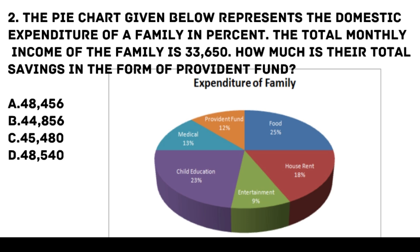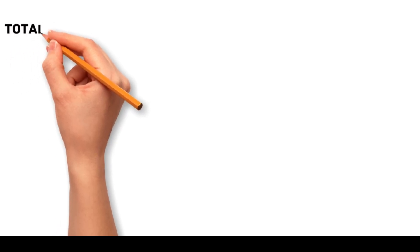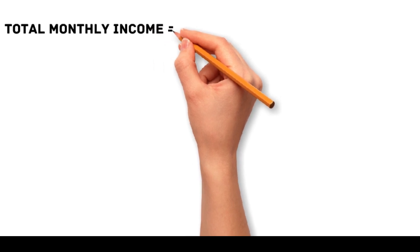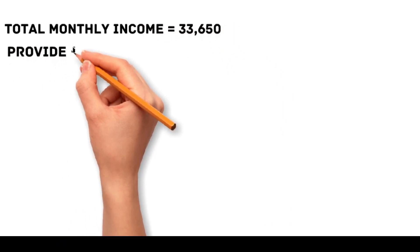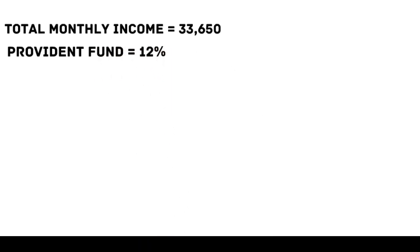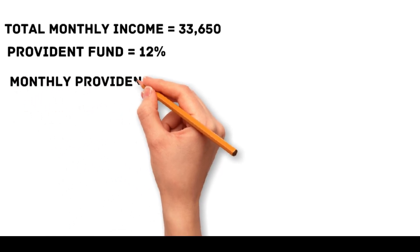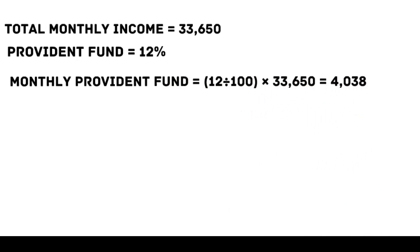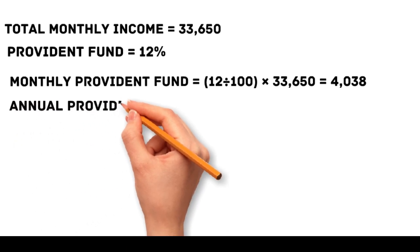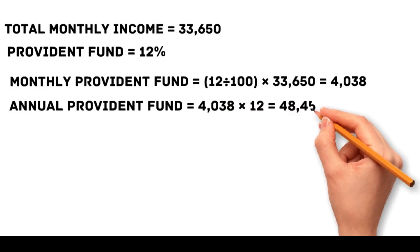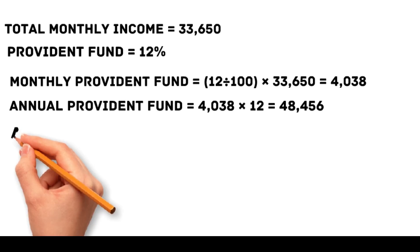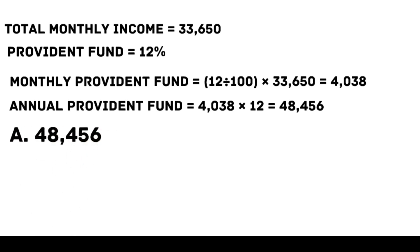To find the total savings in the form of the provident fund for a family with a monthly income of 33,650 pesos, we use the percentage given for the provident fund, which is 12%. Monthly provident fund = 12/100 × 33,650 = 4,038. Annual provident fund savings = 4,038 × 12 = 48,456. Therefore, the correct answer is a, 48,456 pesos.